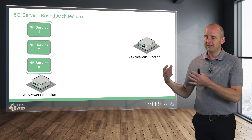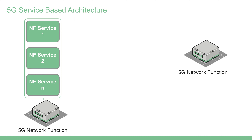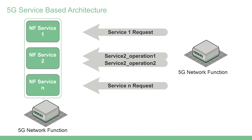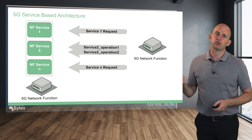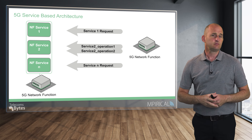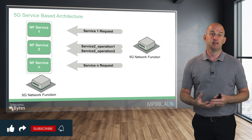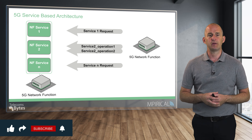So remember, it's a network function, but at the end of the day it's a software process. And here on the left-hand side of the diagram, we've got a network function offering services to the network function on the right-hand side of the diagram. And when we want to invoke or access a service, we use what's called a service based interface. Every single network function has got its own service based interface, which in effect is an API — a standardized application programming interface.